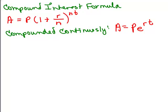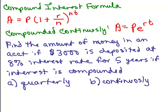Here are the two formulas. Let's do this problem. Find the amount of money in an account if $3,000 is deposited at 8% interest rate for five years if the interest is compounded quarterly, and then let's also see what it would be if it was compounded continuously. So, I want you to put the video on pause.